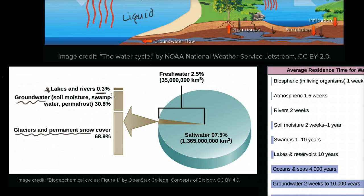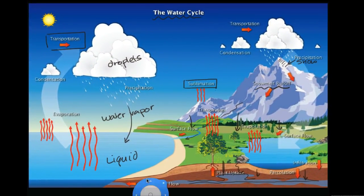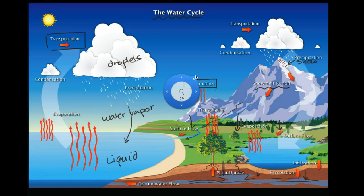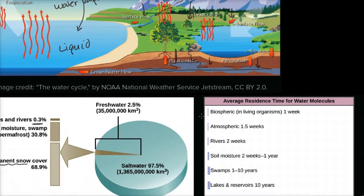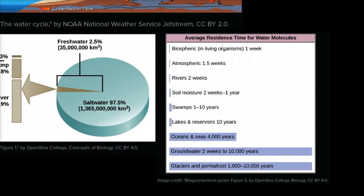Another really interesting thing is how long, on average, water molecules might stay in different parts of the water cycle. A water molecule could stay for a very long time in the ocean, moving around with ocean currents and temperature. Maybe it spends a shorter amount of time in a cloud. People have actually studied this — this is the average residence time for water molecules. Water can stay in glaciers and permafrost for a very long time.